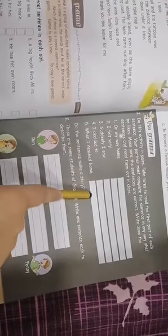Use grammar. Do this activity in pairs. Take turns to read the first part of each sentence. Your partner must complete the sentence in any way she or he likes. Make sure the sentences are correct. Write down the sentences and read them out in class. On my way home, you have to complete it by yourself. I felt weary. You can write hungry as well. Suddenly, I saw a big dog. I decided to run fast. When I reached home, I feel safe. Do the sentences make a story?